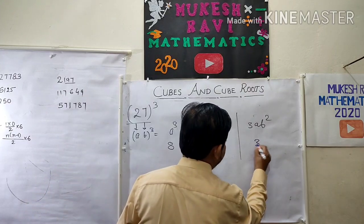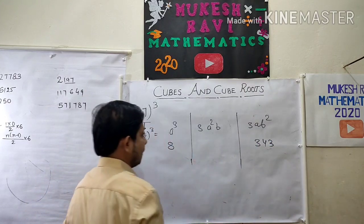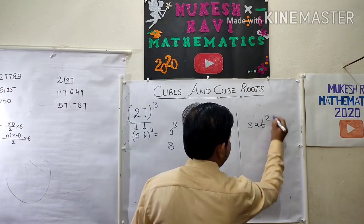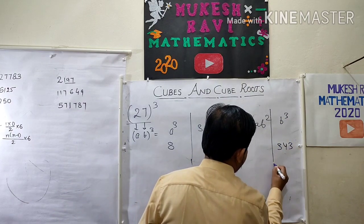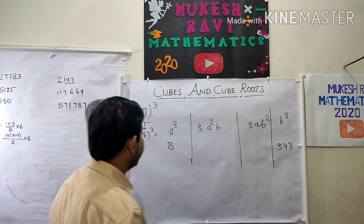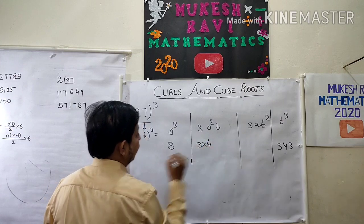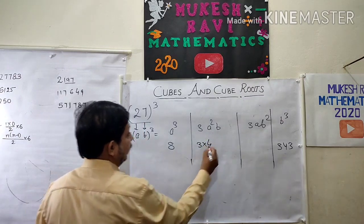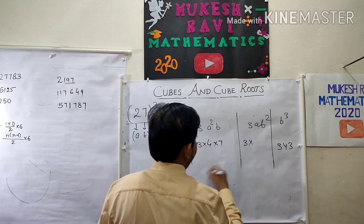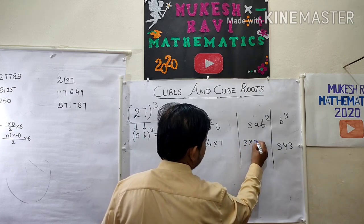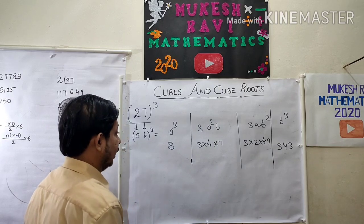Continuing with the formula for 27³ where A = 2, B = 7: 3A²B = 3 × 4 × 7 = 84. Then 3AB² = 3 × 2 × 49 = 294. So the four terms are: 8, 84, 294, 343.